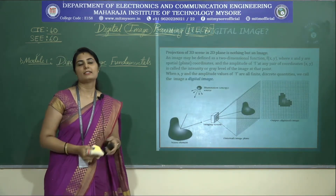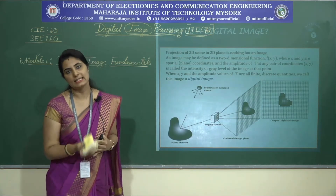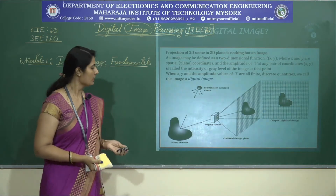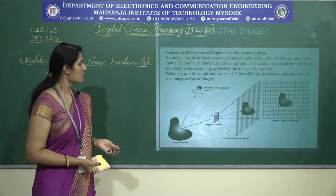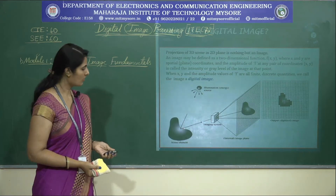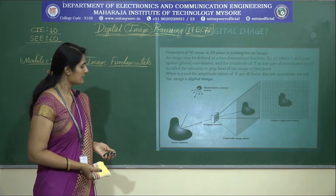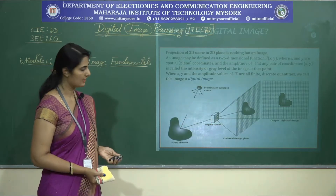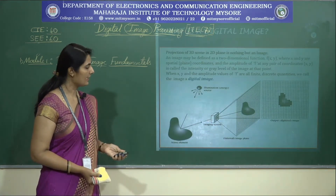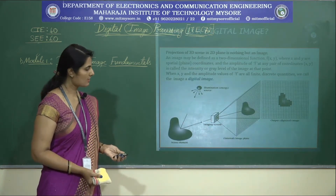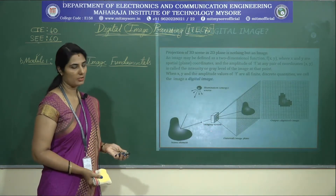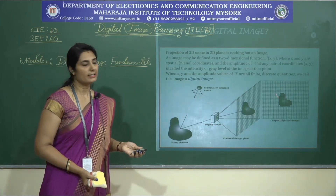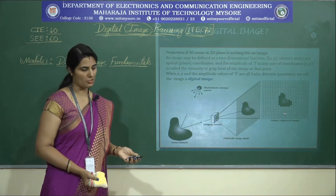An image is the projection of 3D scenes on a 2D plane. Now look at this picture — this is the 3D scene. Whenever a light source is incident or illuminated on this 3D scene, this element will reflect a portion of the incident light. This reflected energy is collected by an imaging system, which might be a digital camera or similar device.